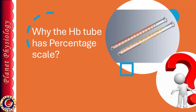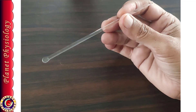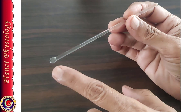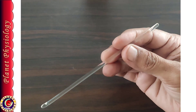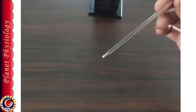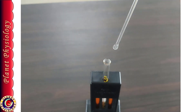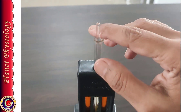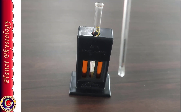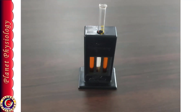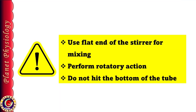The stirrer is a thin glass rod used to mix the contents of the hemoglobin tube. One end of the stirrer is flat and the other is round. The flat end is inserted into the hemoglobin tube and mixing is done by rotatory movement. Many students mistakenly use the round end and perform up-and-down movement — be aware that up-and-down movement can break the tube.